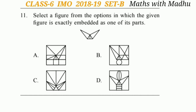Now question 11. Select a figure from the options in which the given figure is exactly embedded as one of its parts. Look at the options carefully — the correct answer will be option D, in which the given figure is exactly embedded as one of its parts.